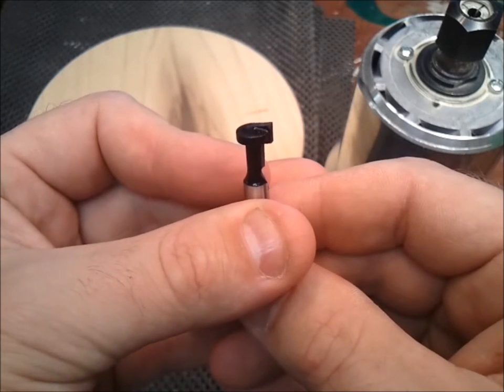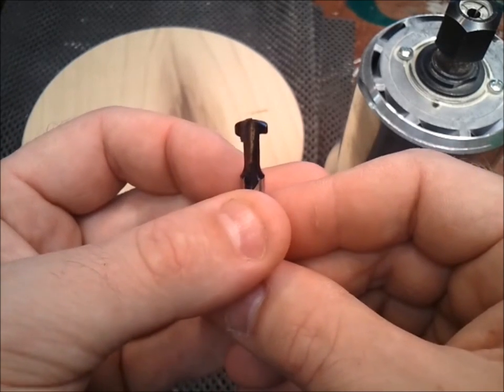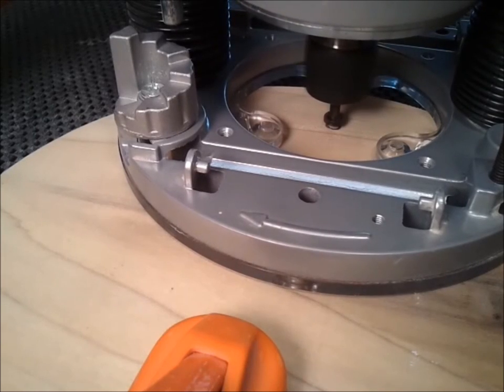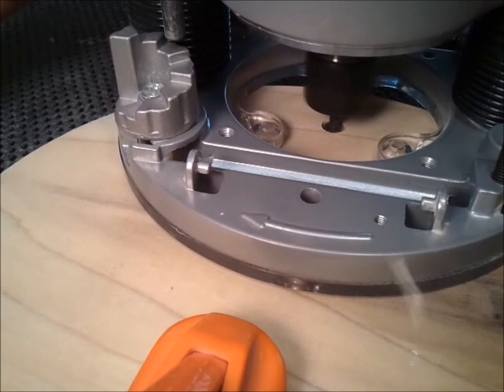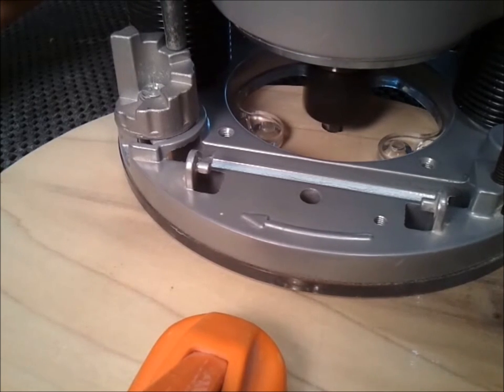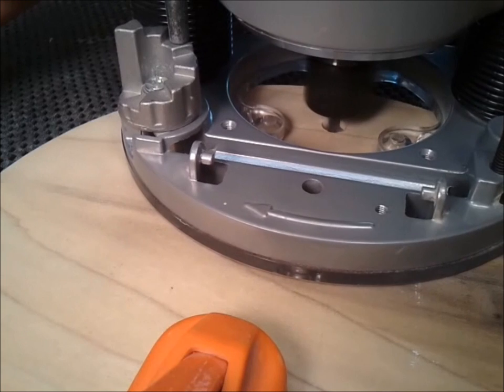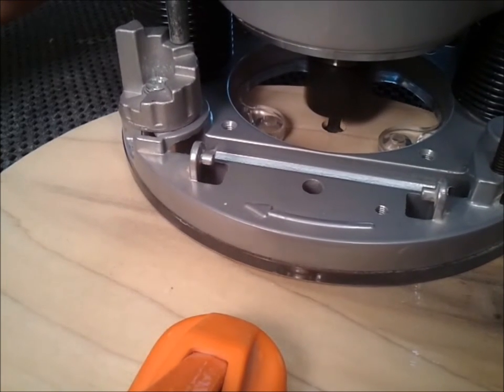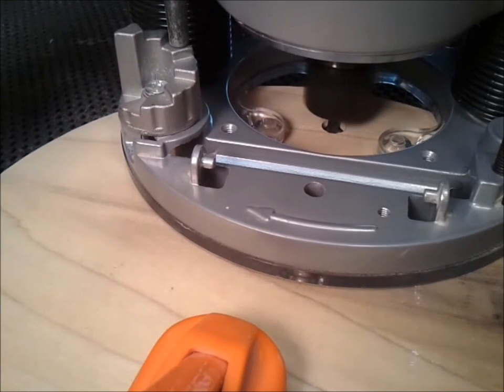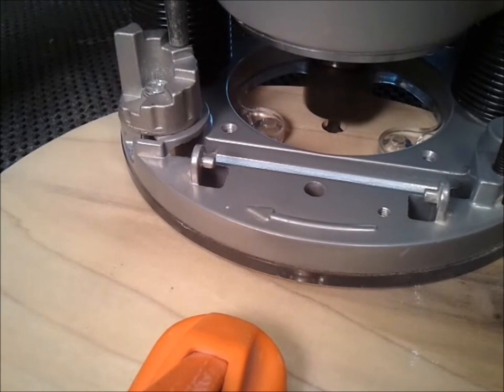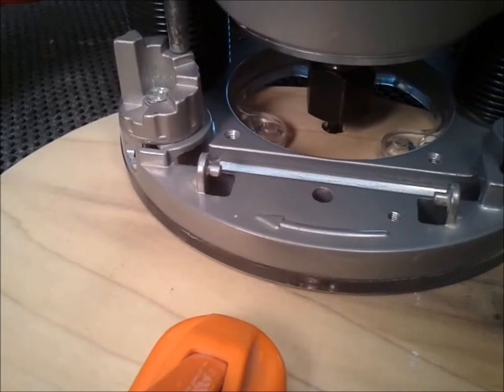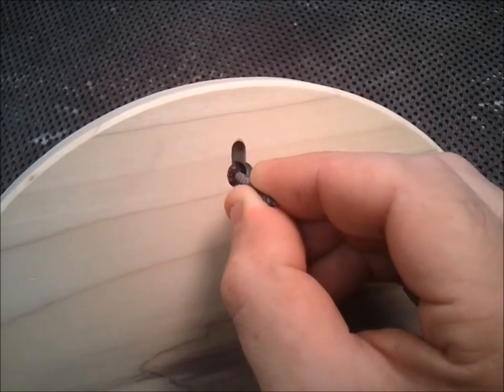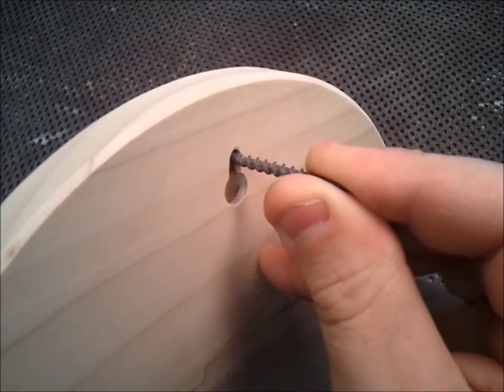Next I'm going to use this keyhole bit. It'll make a nice simple way to hang it. I'll show you how it works as soon as I'm done routing. Now I just stick a screw in the wall and it hangs nicely, nice and securely.